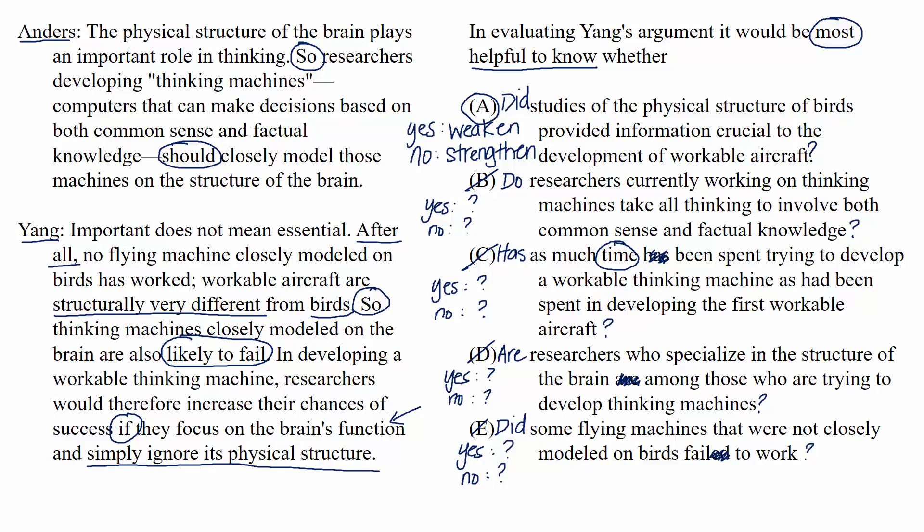To recap, for most helpful or least helpful to know questions, understand the conclusion and evidence of the argument you're asked about and see if there's something you really wish you knew to decide whether you agree or disagree with the arguer. It's like a friend asking, 'Do you think I can afford to buy this house?' — you'd need information like how much they make, their debt, and the cost. If you can't quickly find obviously missing information, go to the choices and phrase each as a question. If the argument is strengthened or weakened depending on whether the answer is yes or no, you have your answer.